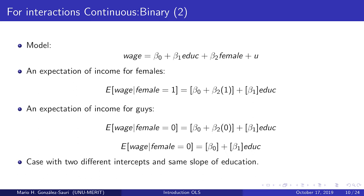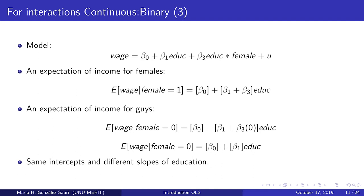The third case is when the model has wage predicted by intercept beta_0, education with coefficient beta_1, and an interaction between education and the female binary variable. Analyzing the conditional expectation for females, the intercept is only beta_0 and the education slope is beta_1 plus beta_3. For males, the intercept is beta_0 and the education slope is beta_1. Therefore, this model can be evaluated with the same intercept but two different slope coefficients for education.